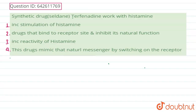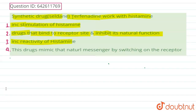This question asks about the synthetic drug terfenadine and how it works with histamine. The four options are: first, it increases the stimulation of histamine; second, the drug binds to the receptor site and inhibits its natural function; third, it increases the reactivity of histamine; and fourth, the drug mimics the natural messenger by switching on the receptor.